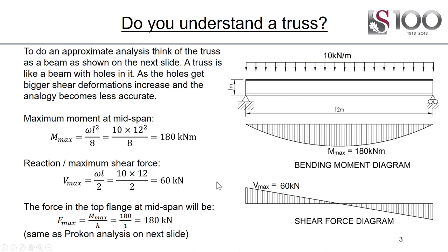If we wanted to do an approximate analysis, think of this truss as a beam with the top flange as the top cord, the bottom flange as the bottom cord, and the holes where the web is. The web, which normally carries the shear, is simply the verticals and diagonals. This analogy will generally work, provided that shear deformations and distortions aren't large. As the holes get bigger, shear deformations increase and the analogy becomes less accurate.